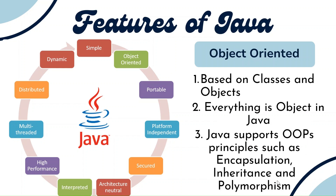Coming to the next feature: object oriented. Java is based on the concepts of classes and objects. A class holds instance variables — the variables written inside the class. Along with instance variables, we also have methods, which we used to call functions in C and C++. So a class is simply a collection of instance variables and methods. In order to access these instance variables and methods, we require objects — through objects we can call them, and everything in Java is considered an object.